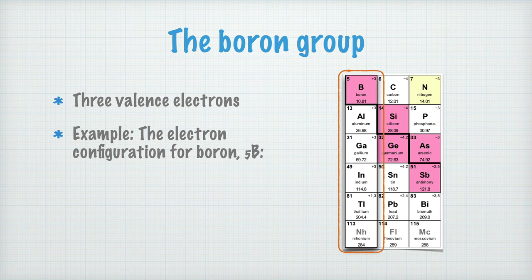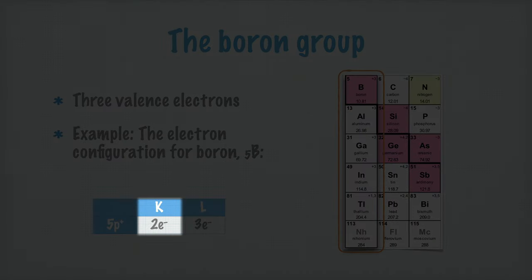Let's write the electron configuration for boron as an example. Boron has the atomic number 5, and thus five protons in its nucleus. Therefore, it gets two electrons in the K shell, and the remaining three in the L shell.